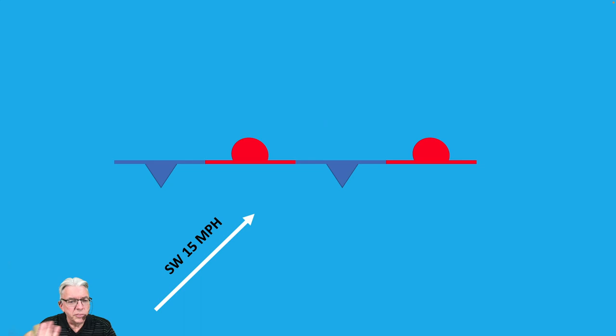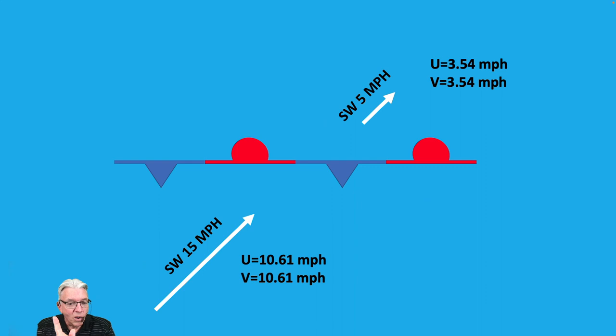Suppose on one side of the front we have a southwest wind at 15, so that hasn't changed. But on the other side of the front, we've got a southwest wind at 5, so the exact same direction, but only a third of the magnitude of the wind on the other side of the front. When you do those calculations, the U component on the wind up here is 3.54 from west to east, and the V component is 3.54 from south to north.